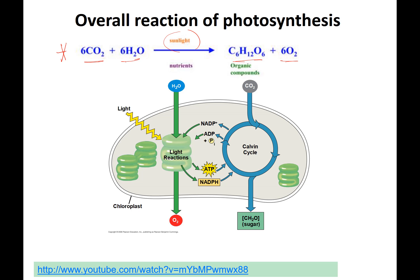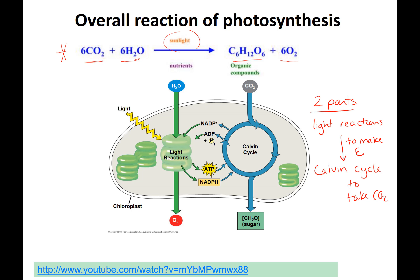Just like with cellular respiration, you need to know where the reactants are used and where the products are made. This is a super important figure — write it down and know it. It shows that there are two parts to photosynthesis: the light reactions and the Calvin cycle. The point of the light reactions is to make energy for the Calvin cycle, and the point of the Calvin cycle is to take CO2 — we call it 'fix it' — into organic carbohydrates.